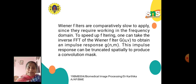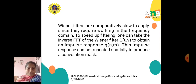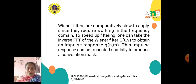Wiener filters are comparatively slow to apply since they require working in the frequency domain. To speed up this filtering, one can take the inverse FFT of the Wiener filter g(u,v) to obtain an impulse response g(n,m). This impulse response can be truncated spatially to produce a convolutional mask.